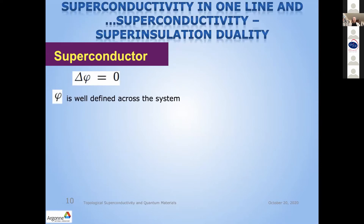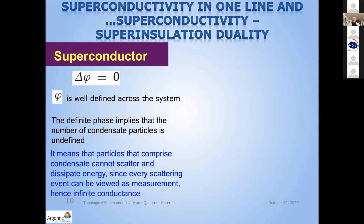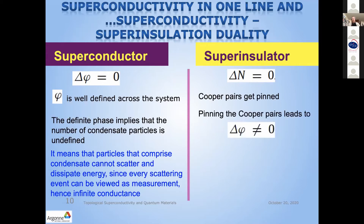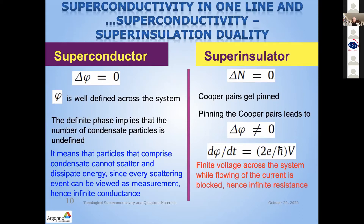Following the same line of reasoning but supposing we manage somehow to pin charge carriers — so the uncertainty in the number of particles is zero — then Cooper pairs are pinned and cannot move. This means we have an uncertain phase. But then by the Josephson relation, we immediately have a finite voltage across the system without any current. This means infinite resistance. So if we have superconductivity as a phenomenon, then we should have superinsulation as well.